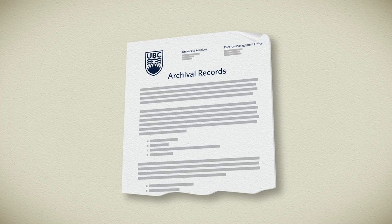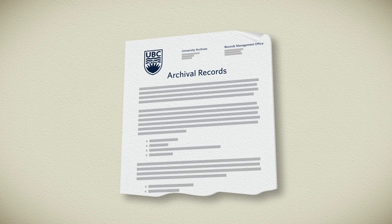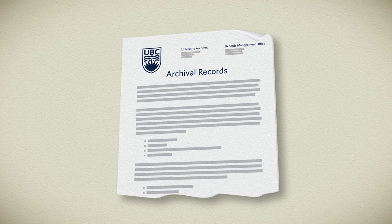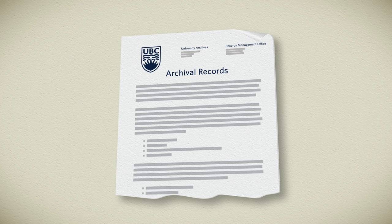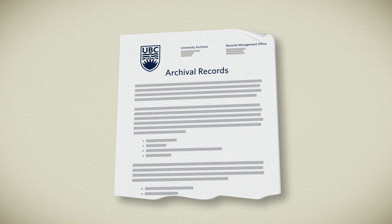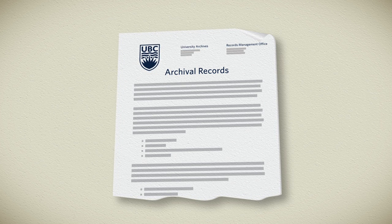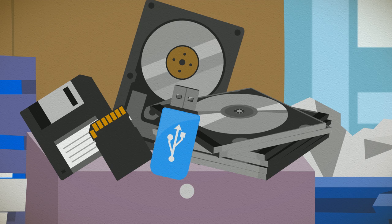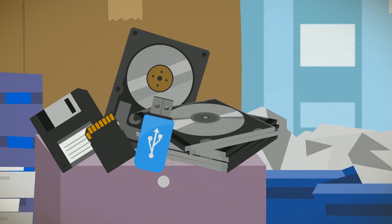University record schedules describe legal, administrative, or operational retention periods. If no retention period exists, contact the records management office. As a rule, we do not keep records around just in case we need them.